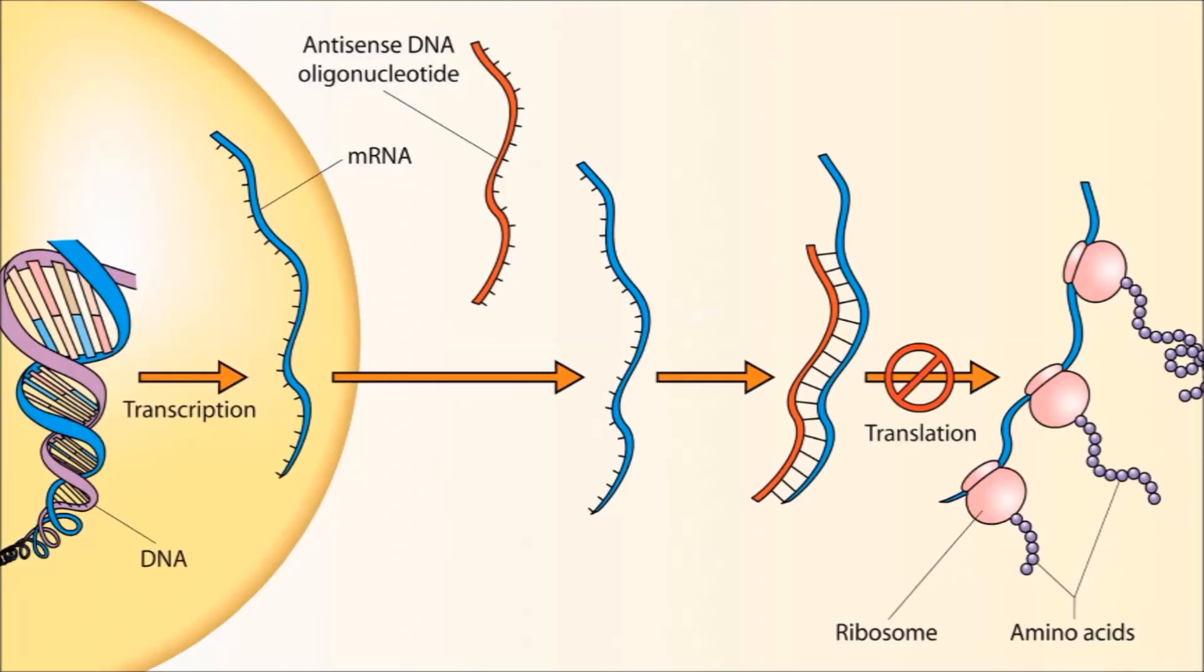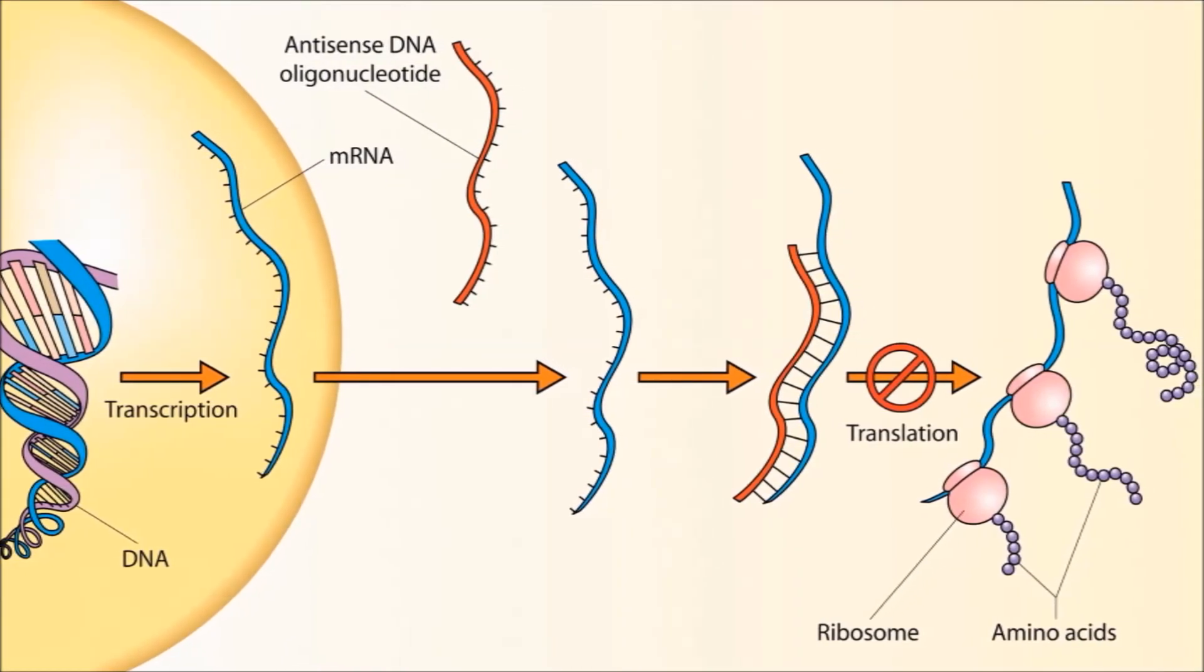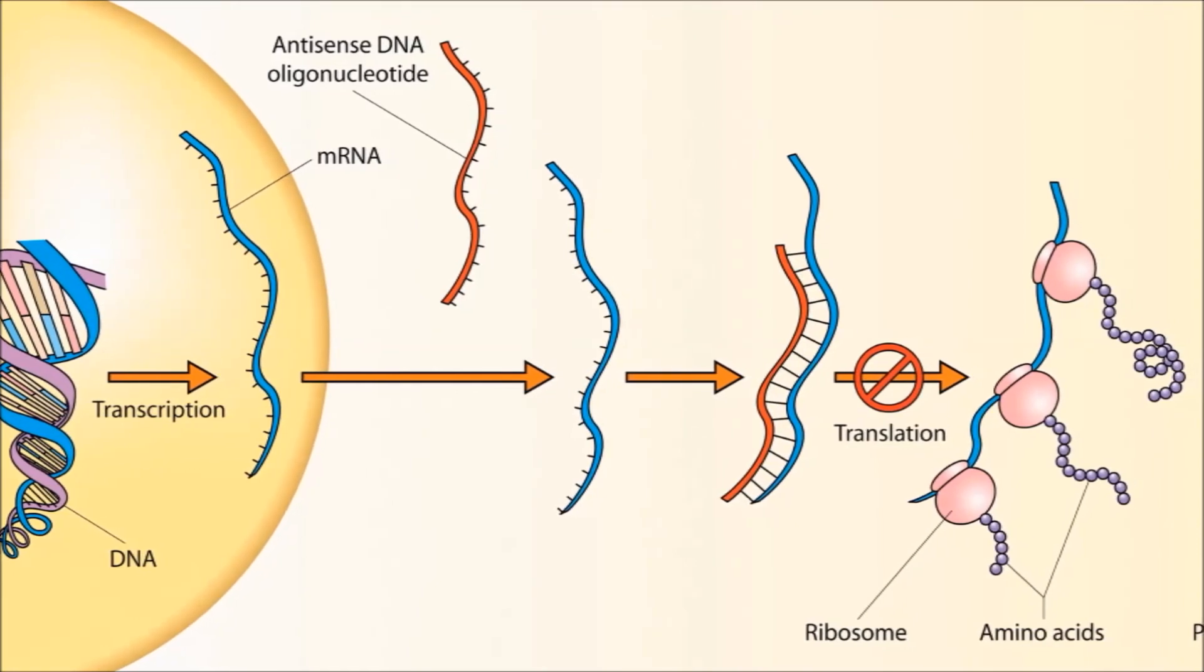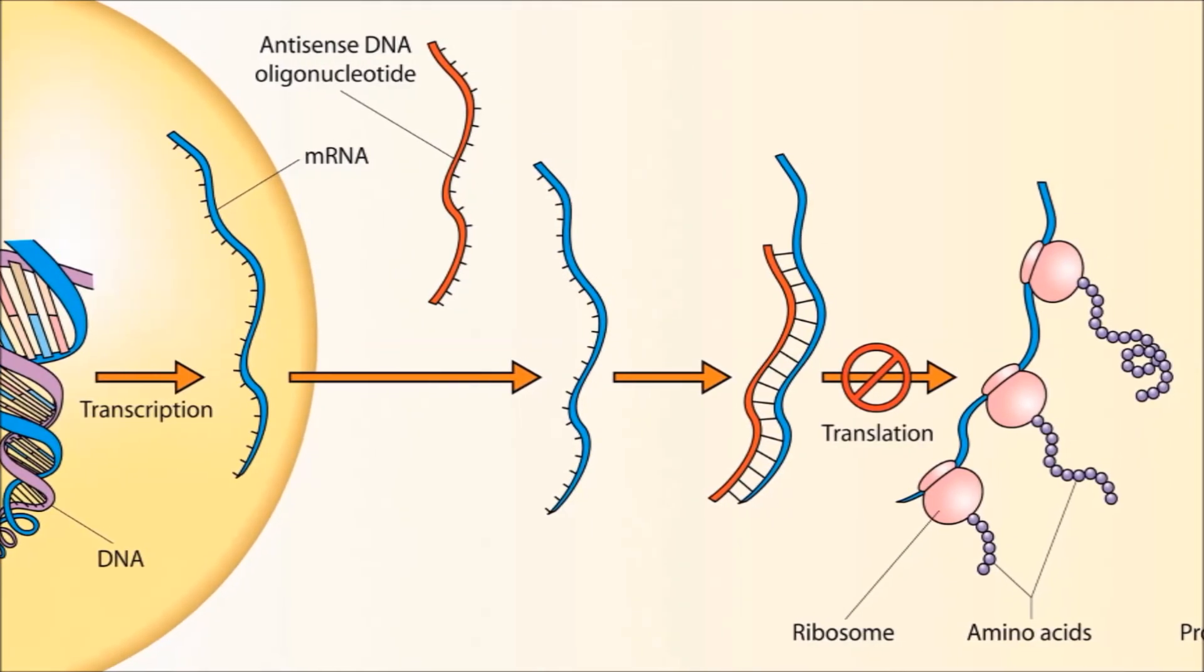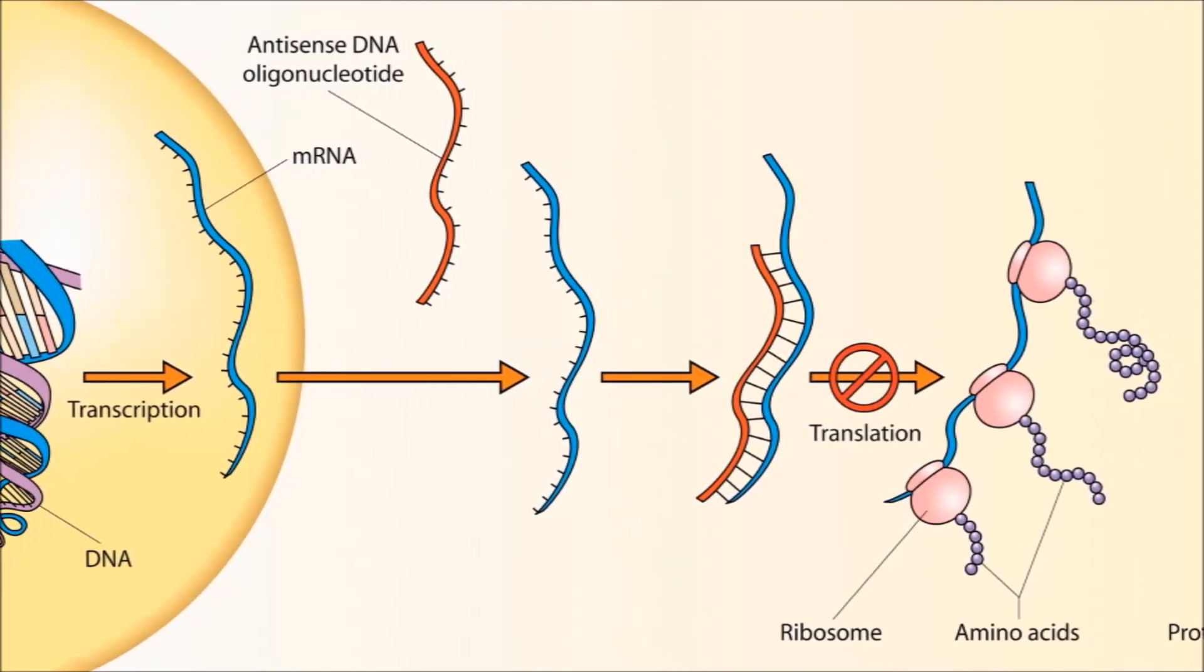The treatment, which uses short pieces of genetic material similar to DNA known as antisense oligonucleotides or ASOs, blocks the overexpression of the MeCP2 gene.